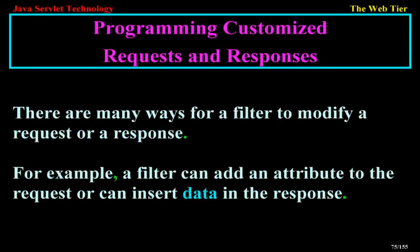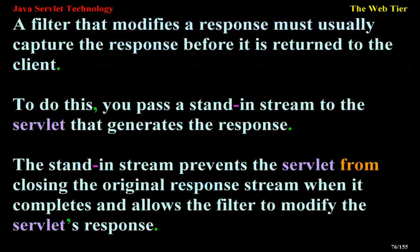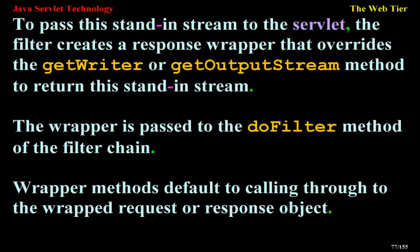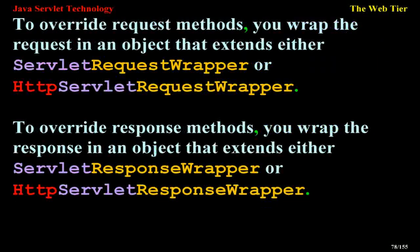Programming customized requests and responses. There are many ways for a filter to modify a request or a response. For example, a filter can add an attribute to the request or can insert data in the response. A filter that modifies a response must usually capture the response before it is returned to the client. To do this, you pass a stand-in stream to the servlet that generates the response. The stand-in stream prevents the servlet from closing the original response stream when it completes and allows the filter to modify the servlet's response. The filter creates a response wrapper that overrides the getWriter or getOutputStream method to return this stand-in stream. To override request methods, you wrap the request in an object that extends either ServletRequestWrapper or HttpServletRequestWrapper. To override response methods, you wrap the response in an object that extends either ServletResponseWrapper or HttpServletResponseWrapper.